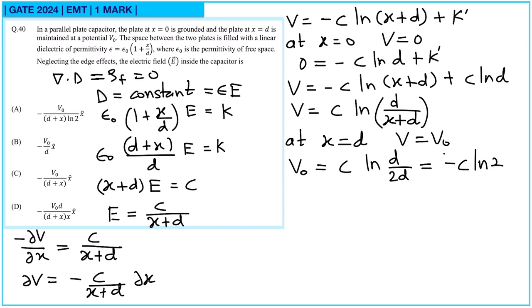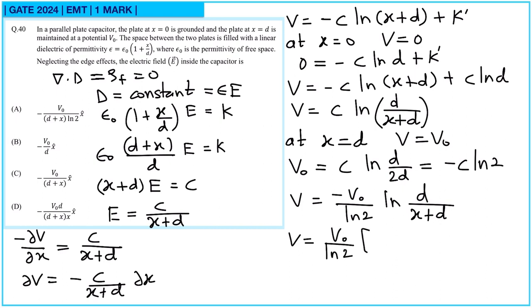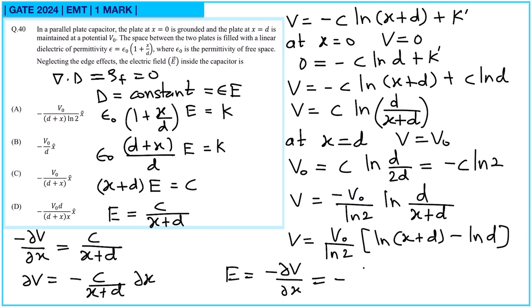Applying the second boundary condition: at x equal to d, V equal to V₀. So V₀ equal to c times ln(d upon 2d), which is c times ln(1/2), or minus c times ln 2. So c equal to minus V₀ by ln 2. Therefore V equal to (V₀ by ln 2) times ln(x plus d by d). Now E equal to minus dV by dx gives minus of V₀ by ln 2 times 1 upon (x plus d). So option A is correct.